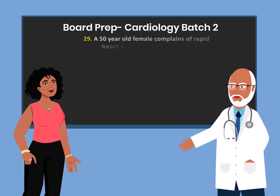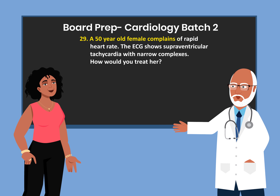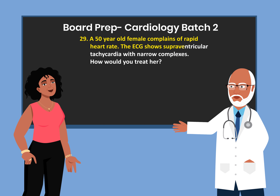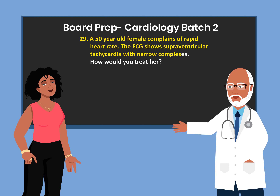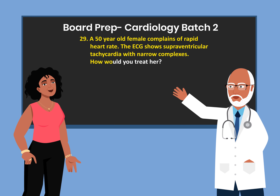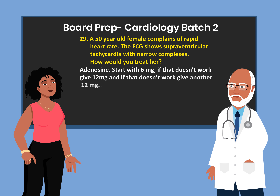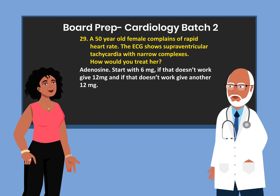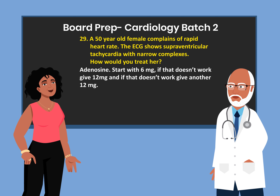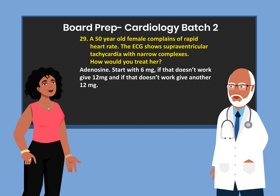A 50-year-old female complains of rapid heart rate. The ECG shows supraventricular tachycardia with narrow complexes. How would you treat her? Adenosine. Start with 6 milligrams. If that doesn't work, give 12 milligrams. And if that doesn't work, give another 12 milligrams.